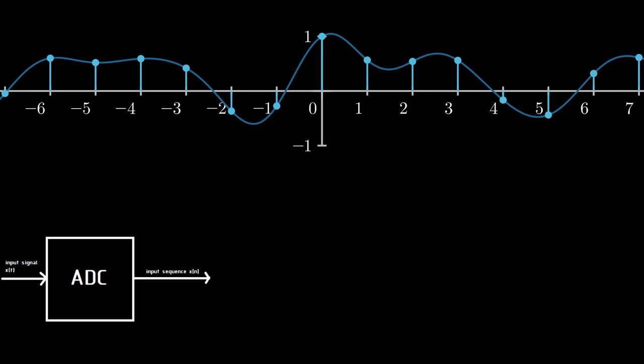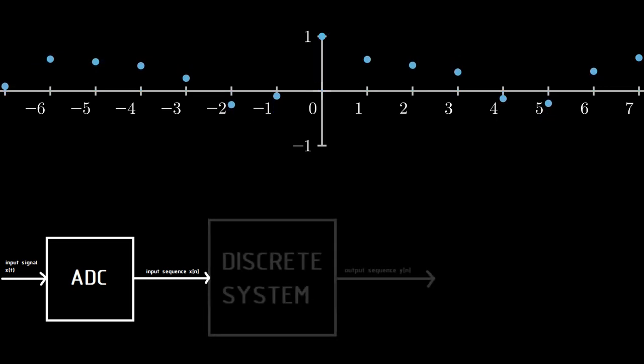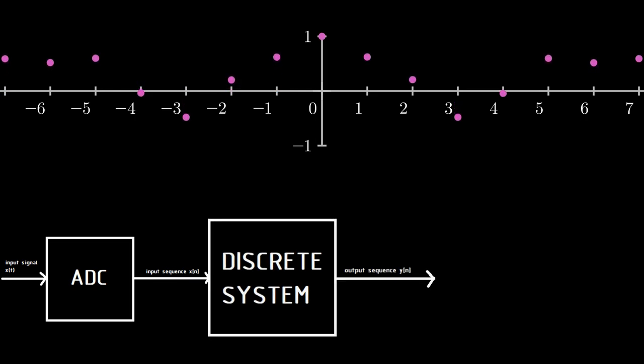XN is passed through a discrete system which produces a discrete signal YN. Discrete system is the heart of DSP. It can have various properties but we are only going to discuss LSI systems which have two very important properties of linearity and shift invariance.